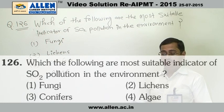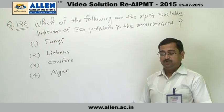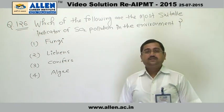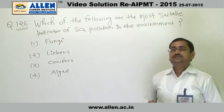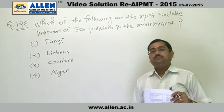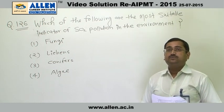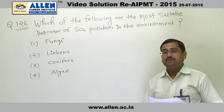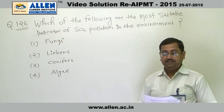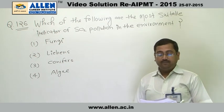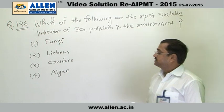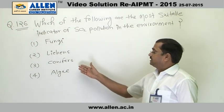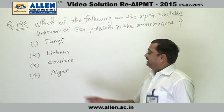Question number 126: which of the following are the most suitable indicators of SO2 pollution in the environment? As we know, lichens are very sensitive to air pollution, exclusively SO2 pollution, and that is why lichens are not found near big cities or metropolitan cities. So out of the four options — fungi, lichens, conifers, and algae — the correct answer is lichens.